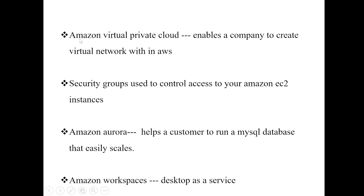Amazon Virtual Private Cloud enables a company to create a virtual network within AWS. Security groups are used to control access to your Amazon EC2 instances — remember this: for controlling access to EC2 instances, use security groups, not IAM policies. Amazon Aurora is used to run a MySQL database that is highly scalable.